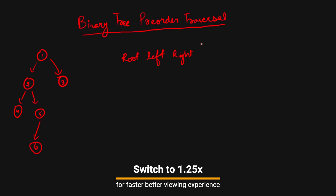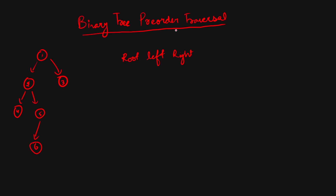We have three types of traversal: one is pre-order, second is in-order, and third is post-order. In pre-order, 'pre' means first, so first we print root. In in-order, first we print left, then our root, and then our right. This is our in-order traversal.